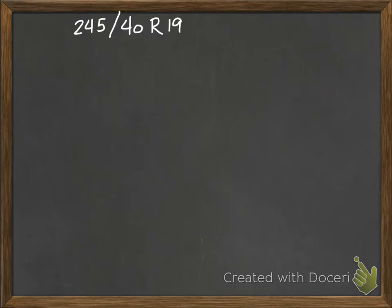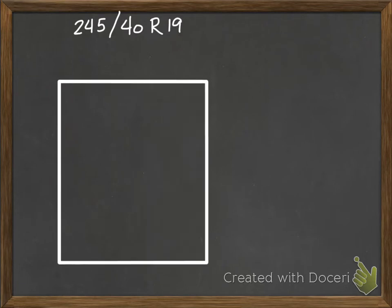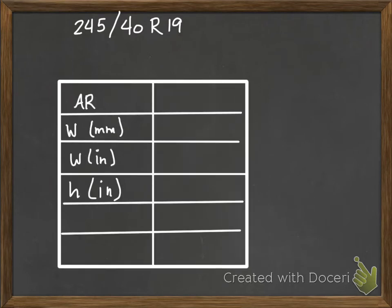Let's look at how to find the height from this number that we have. The first thing I usually do is I set up a table, because then I have everything all where I need it to be. So I'm going to go ahead and create my little table. So I'm going to put in the things that I know. I know my aspect ratio from this. It's 40%. I know my width because it's given, that's 245 millimeters. And I know the diameter of the rim is 19 inches.